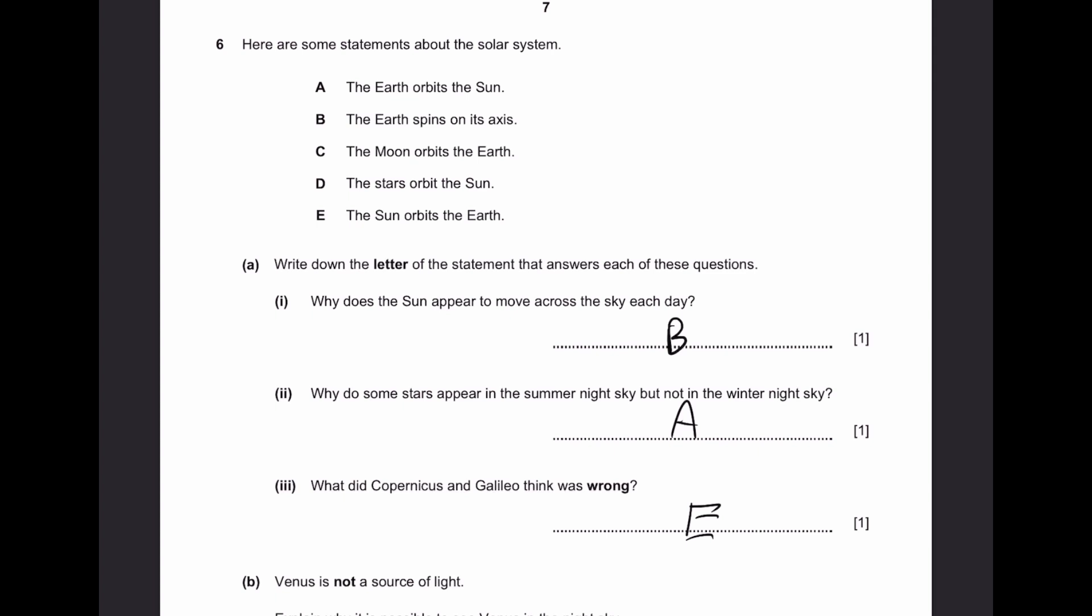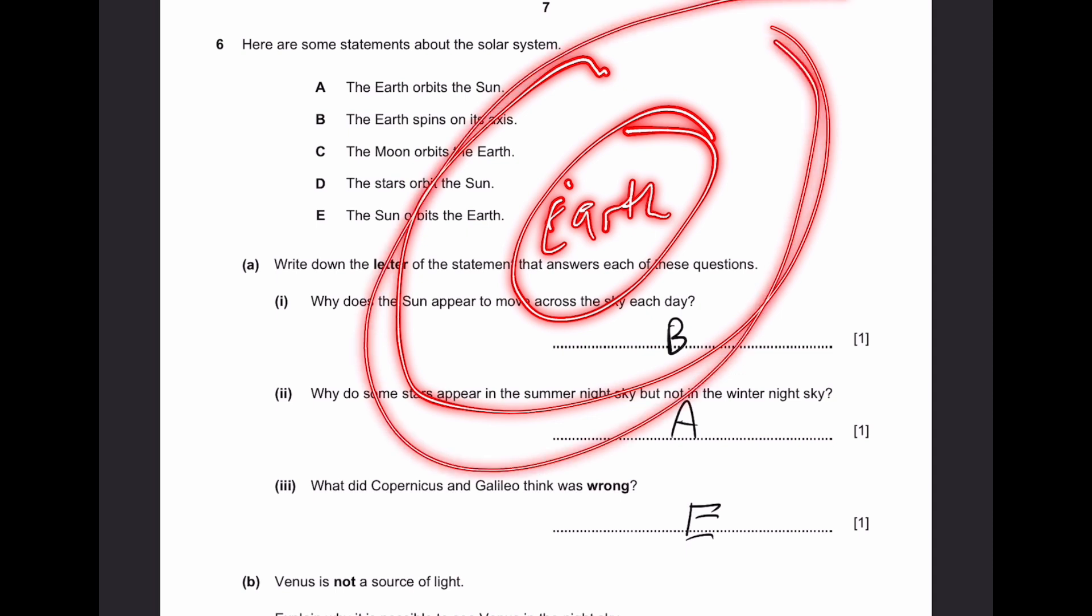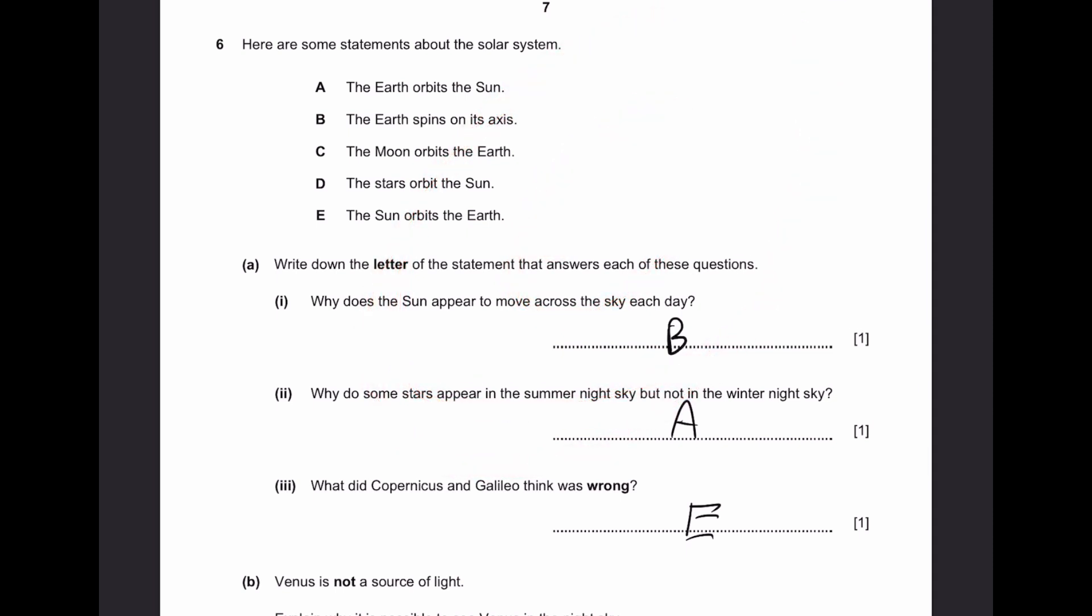Question 3. What did Copernicus and Galileo think was wrong? The answer is E. The sun orbits the earth. Copernicus and Galileo were disrespected in community for thinking about this because everyone used to believe the earth was at the center and all planets orbited around earth, which is completely wrong.